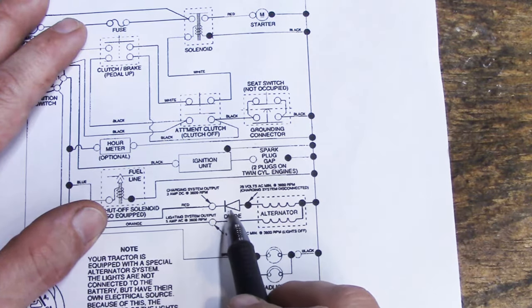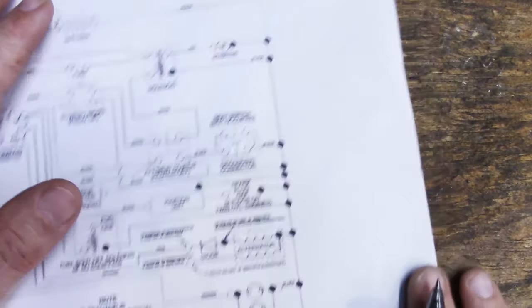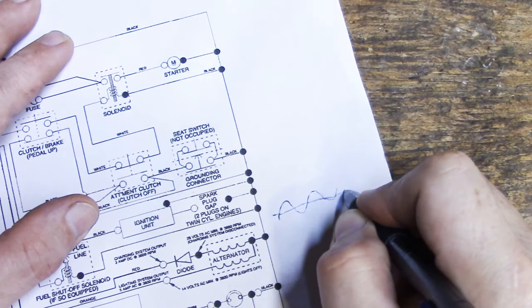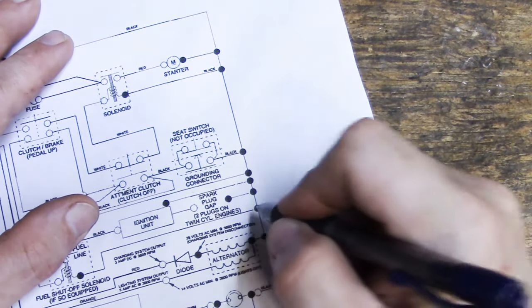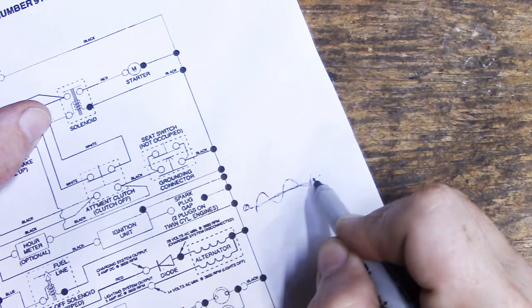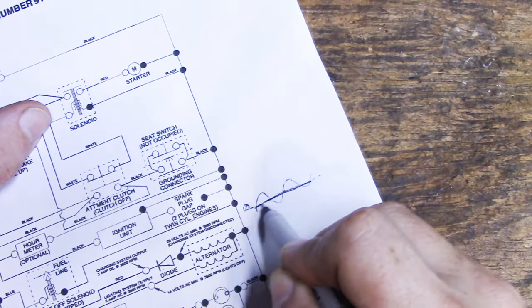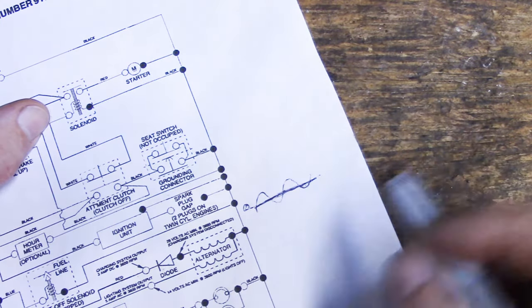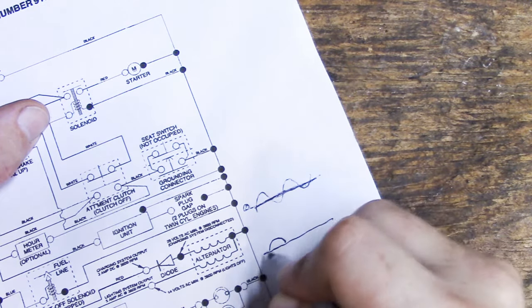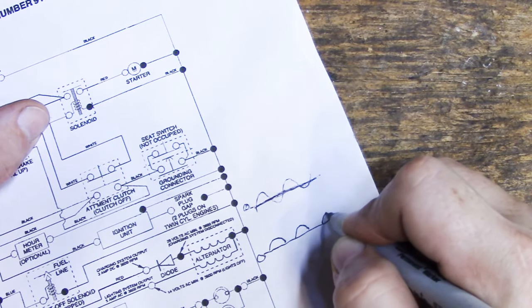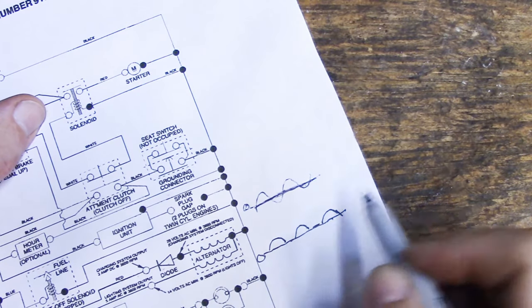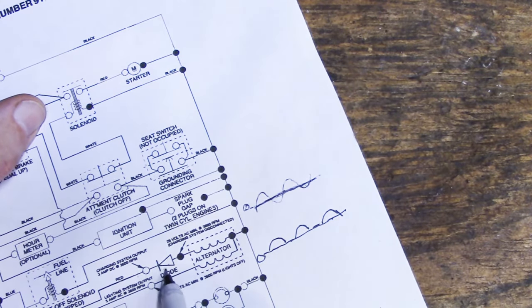A diode has one job. It allows current to flow one direction and doesn't allow it to flow the other direction. So you can use a single diode on an AC system. Remember, an AC system has a wave like this. This is zero. So what the diode is then doing is preventing half of this current from going through. Whatever is negative, it will not prevent that from going through.